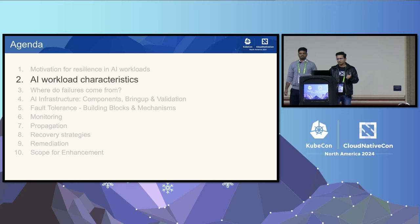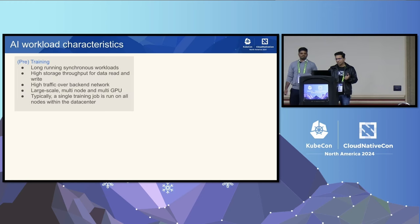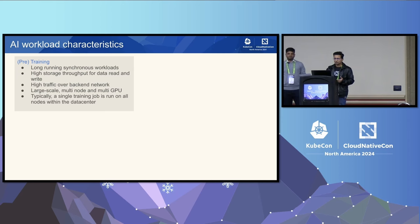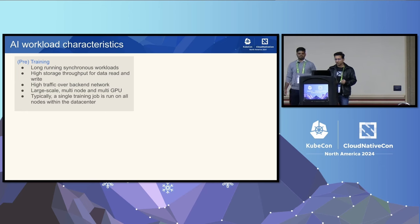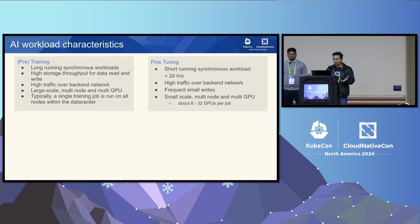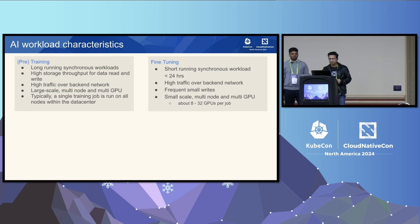Let's take a step back and understand the characteristics of AI workloads. Pre-training is one of the large-scale workloads running on these clusters. It's a long-running and synchronous workload requiring high storage throughput for data read and write, with very high traffic over the back-end. It's a large-scale multi-node, multi-GPU workload and a single training job is usually run within the entire data center. Fine-tuning is a smaller form of training — a short-running synchronous workload, less than 24 hours, with high back-end traffic and frequent small writes, but at smaller scale with 8 to 32 GPUs.